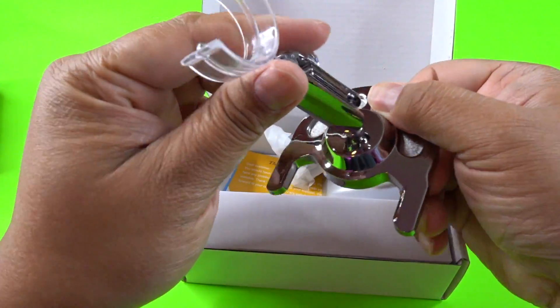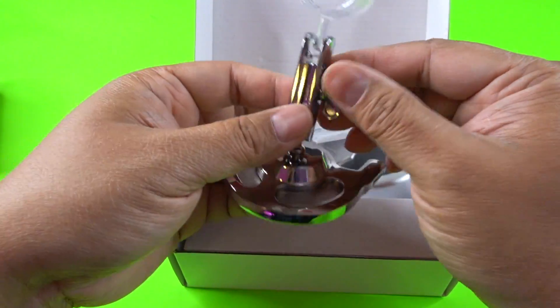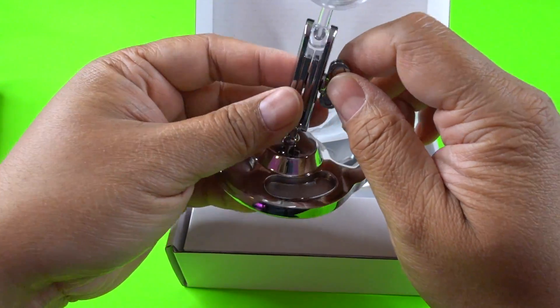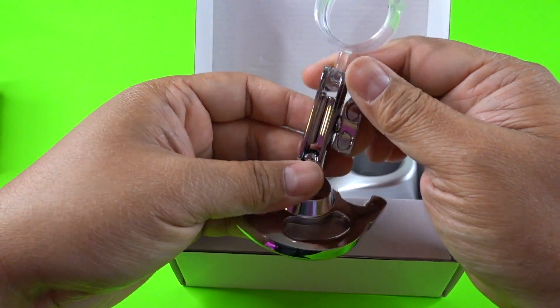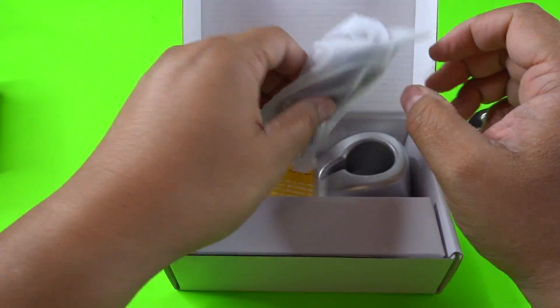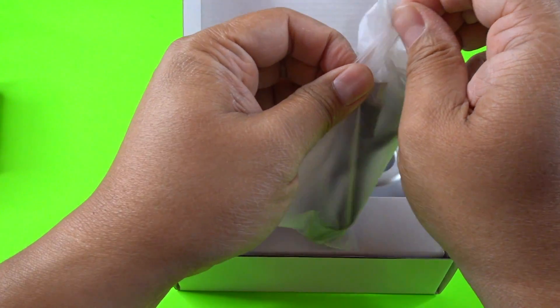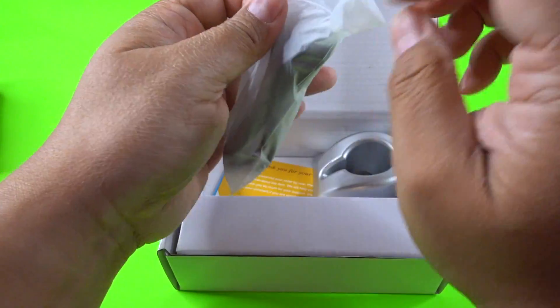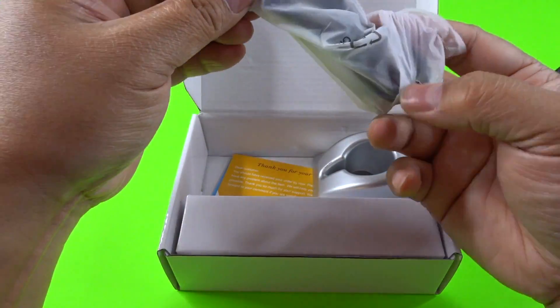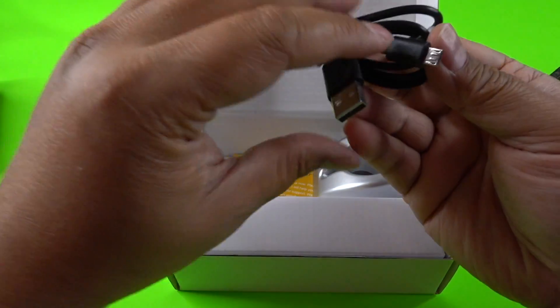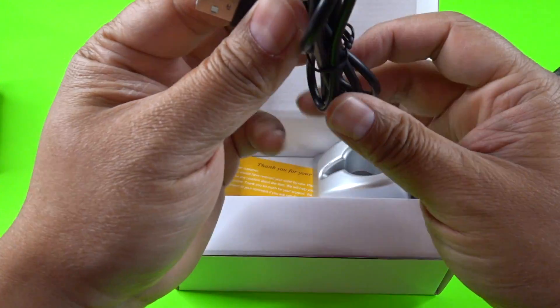Alright so the first thing I see is the stand. This does feel a little hefty on the bottom to hold it in place. And it's got this ball here that you can tighten to hold it in any position. Here is probably the charging cable. So here we have the USB to micro USB charging cable.